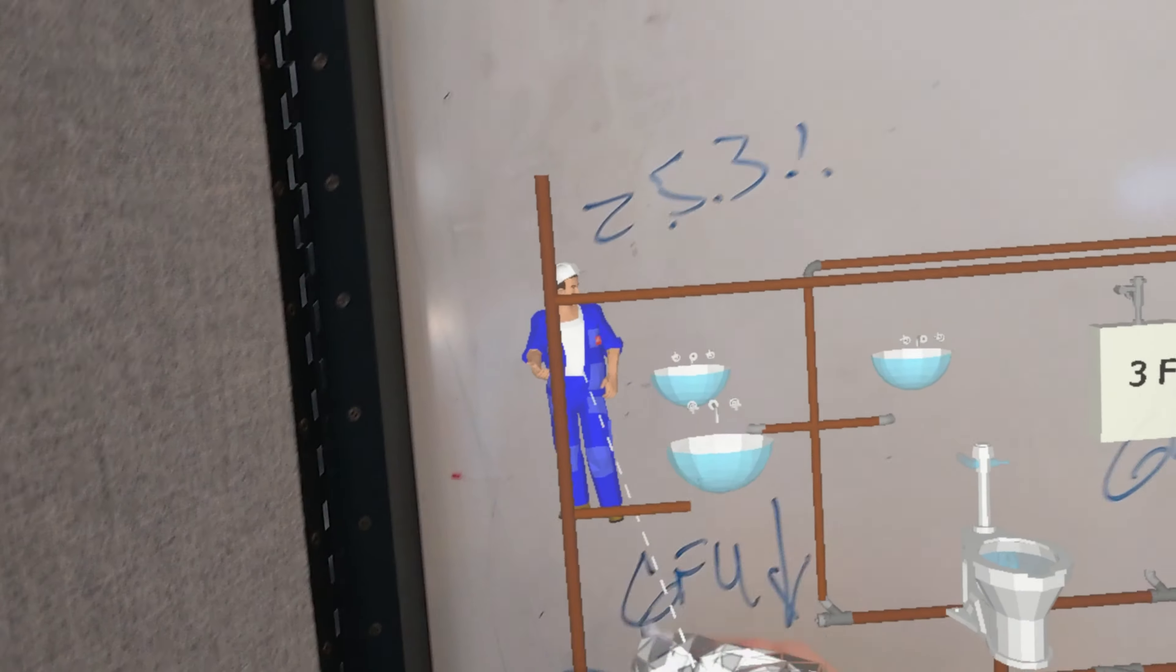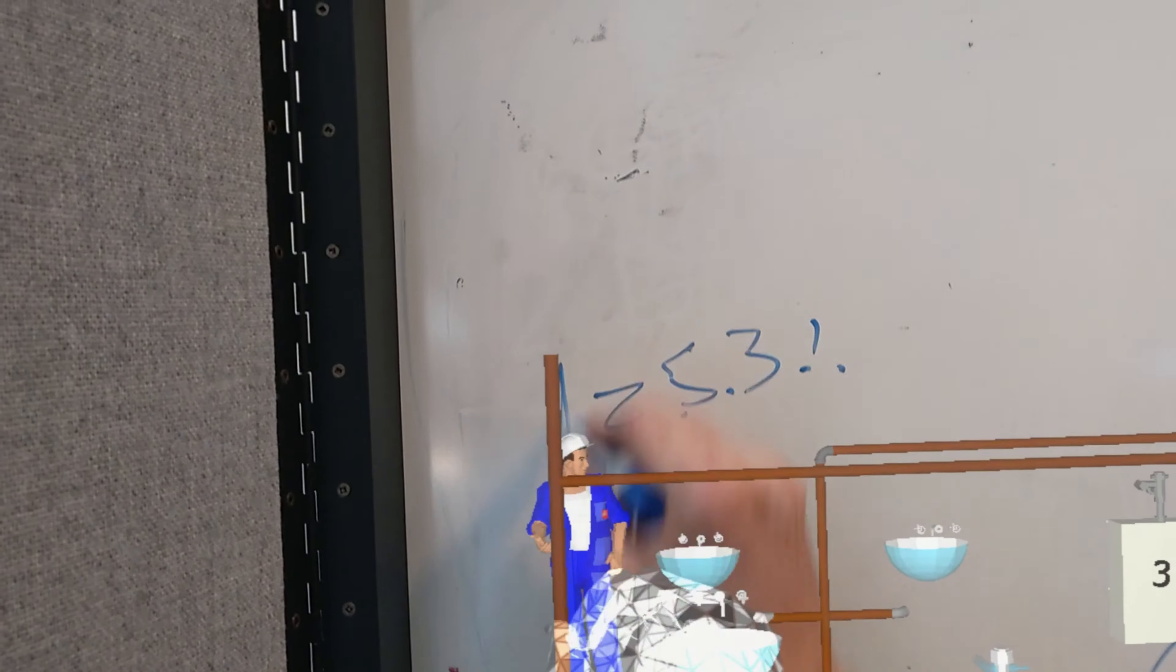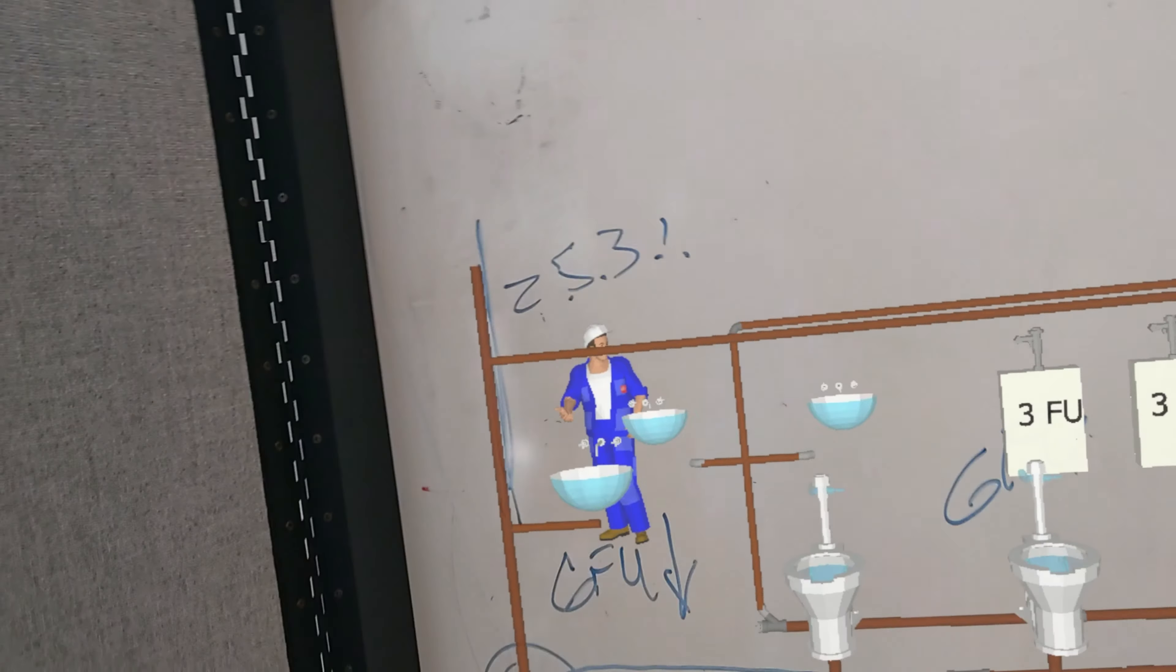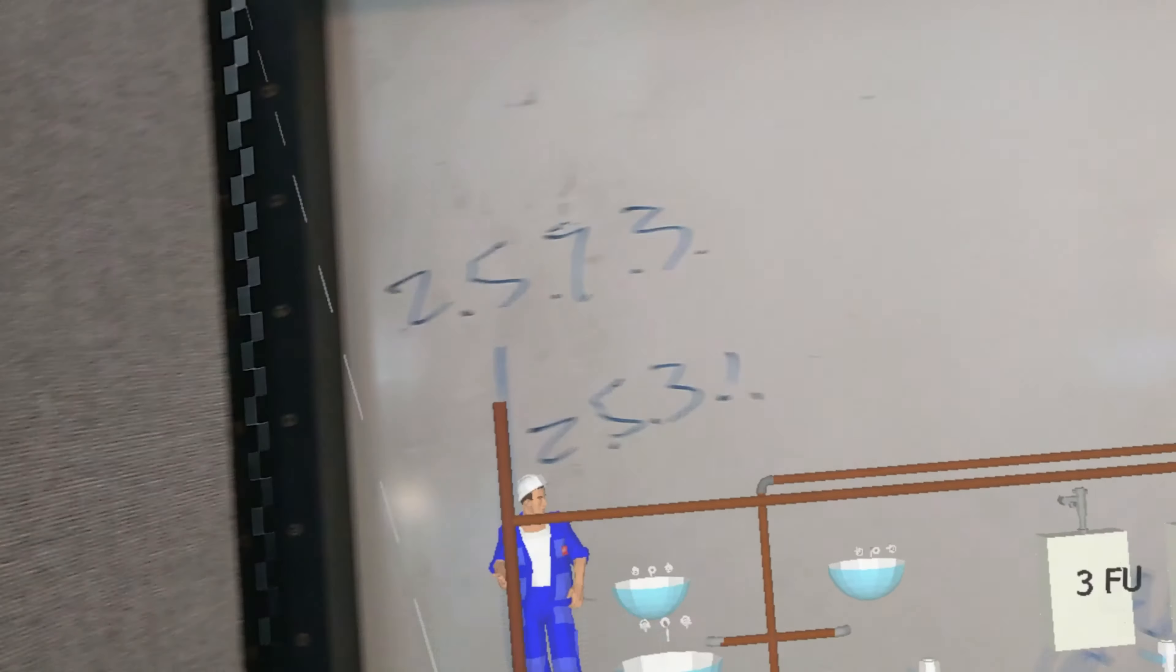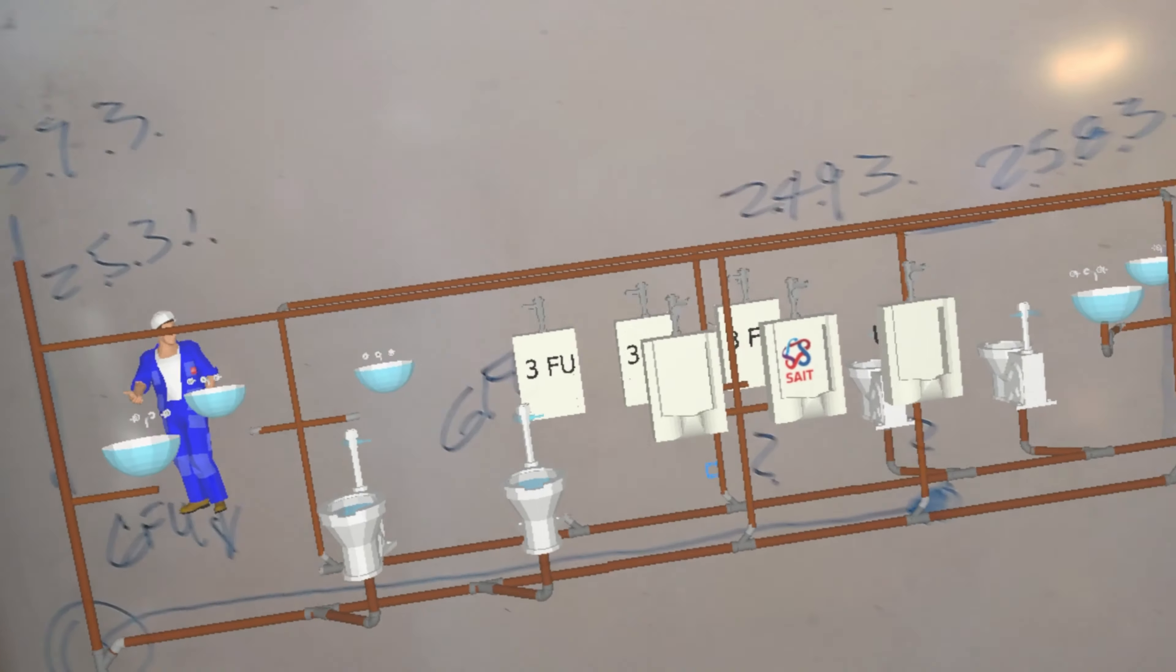Now the dry portion of the circuit vent, which is this part right here. Well that part right there. That's sized by 2573. These are the things I want my students to know when they do the roughing.